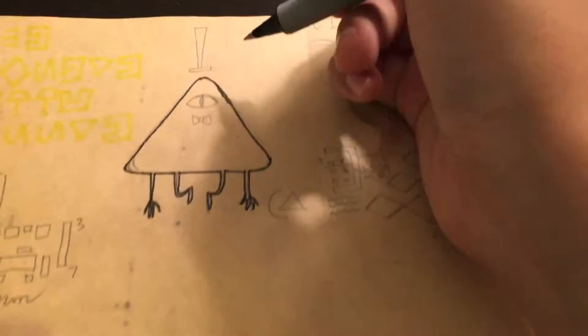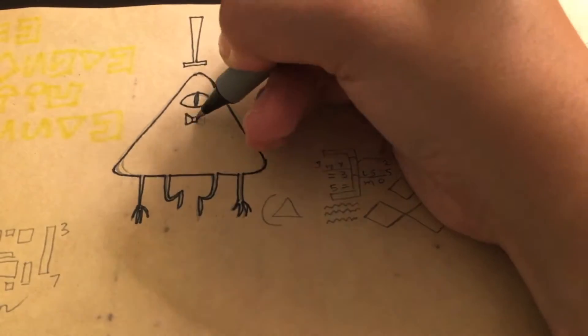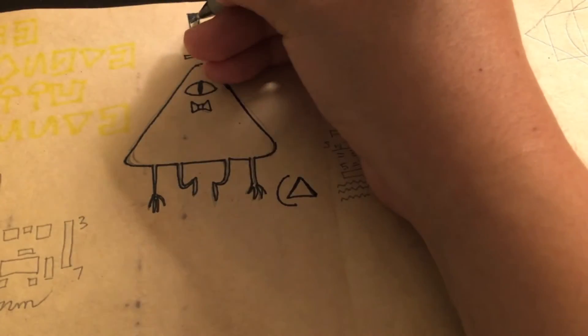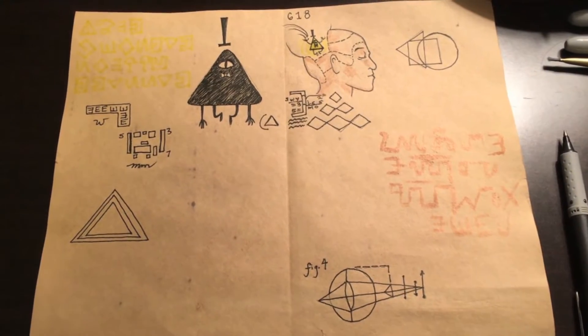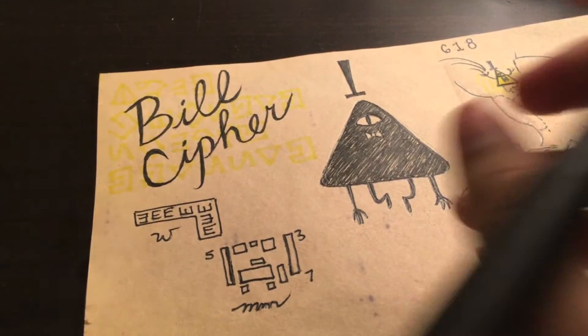The Bill at the top is kind of sketchy so I left it that way and then I also did the Bill Cipher main text.